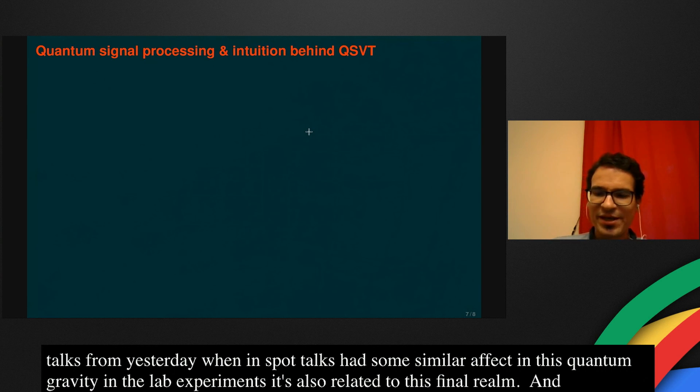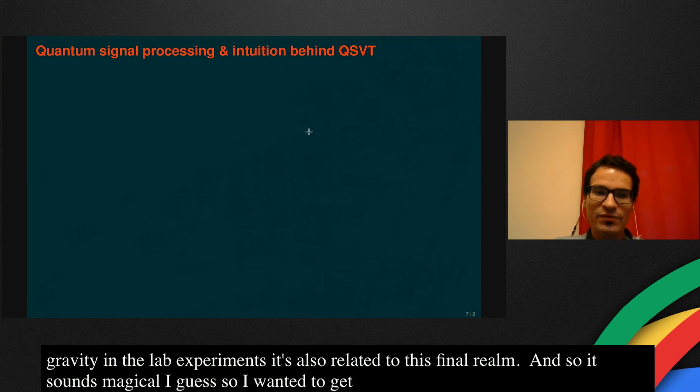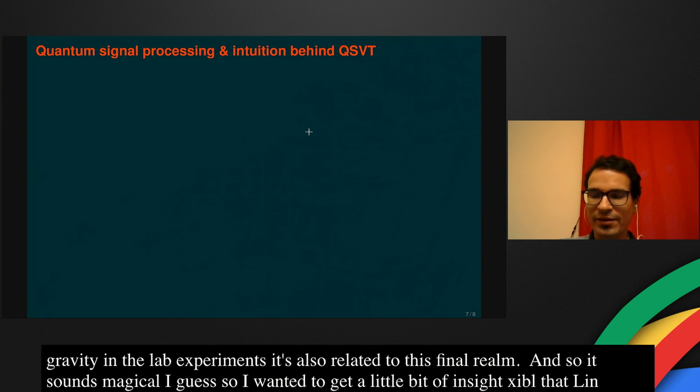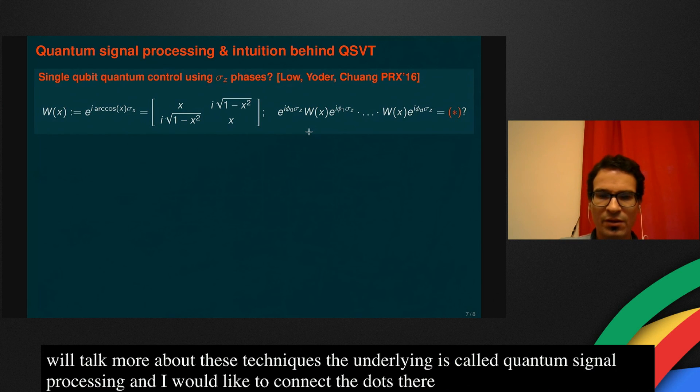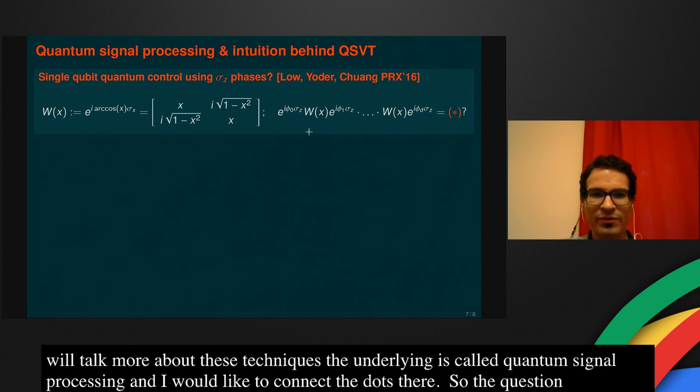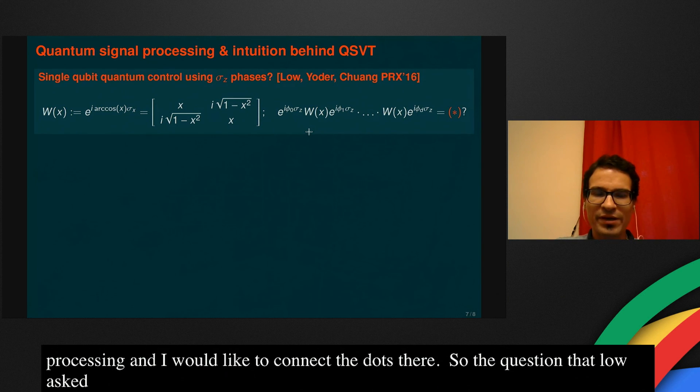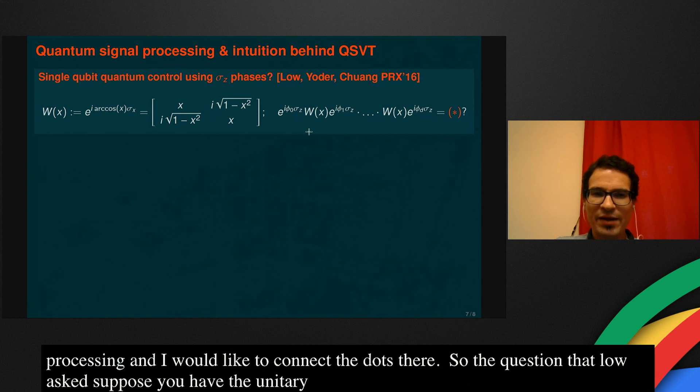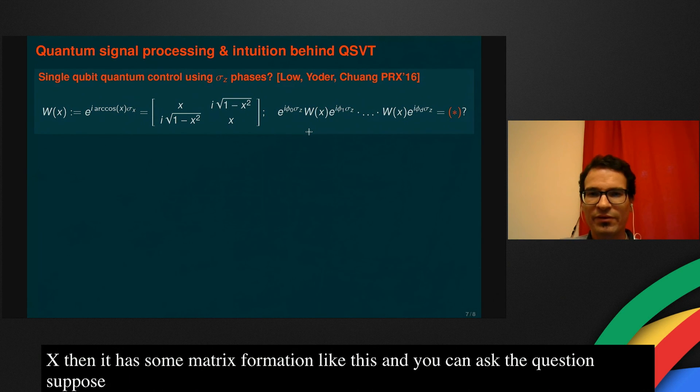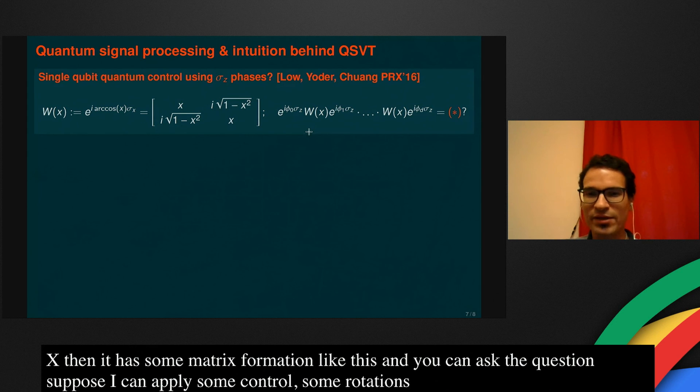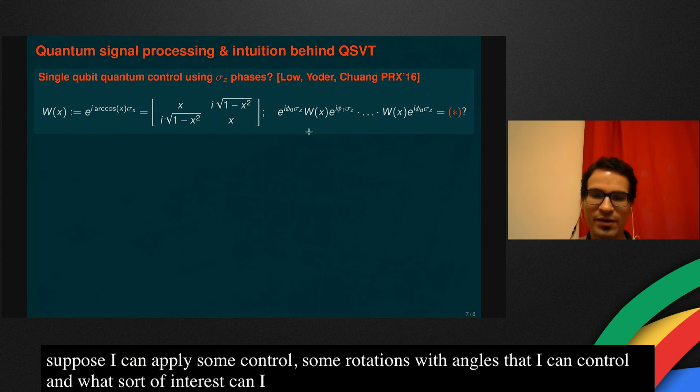So it sounds pretty magical, I guess. I just wanted to get a little bit of insight. And I believe that Lin-Lin will talk more about these techniques. The underlying technique is called quantum signal processing. And I would like to connect the dots there. So the question that Low, Yoder, and Chuang asked in their beautiful paper from four years ago was the following. Suppose that you have a unitary which implements some X rotation with some unknown angle, which is now for simplicity I denoted by R cosine X. Then it has some matrix formulation like this. And then you can ask the question, suppose that I can apply some control, some Z rotations with some angles that I can control. Then what sort of unitaries can I get as a result of this?